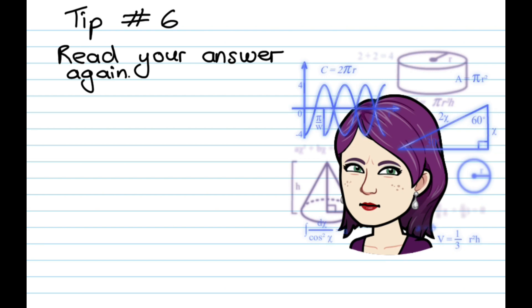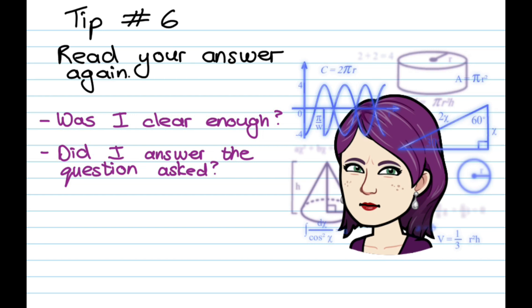Tip number six: read your answers again. So many learners make this mistake because sometimes you answer the question and you are sure that you're done with the question, but you're not actually clear enough in your answer. So you have to check: was I clear enough? Did I answer the question that was asked?